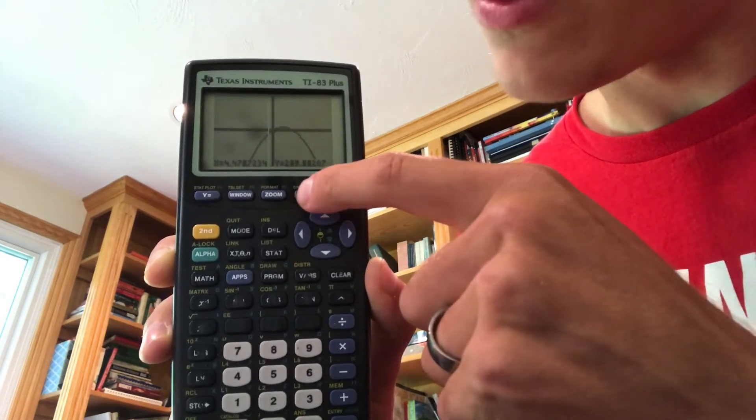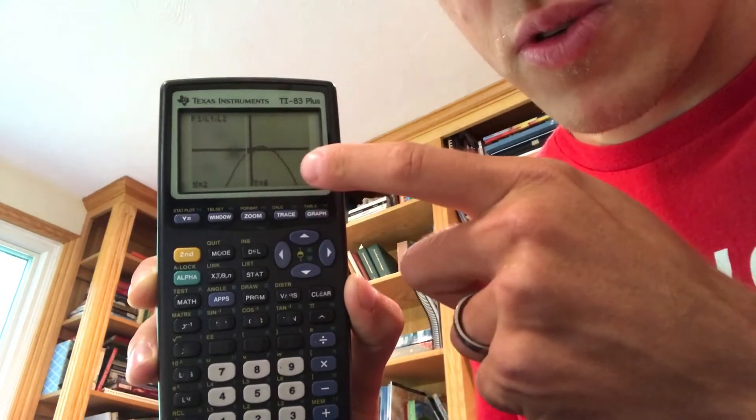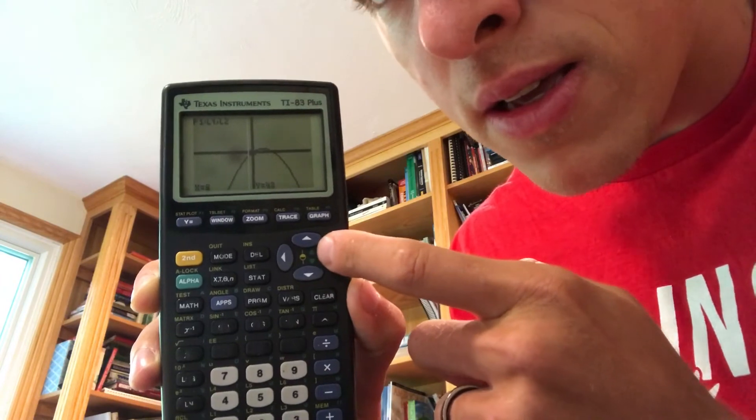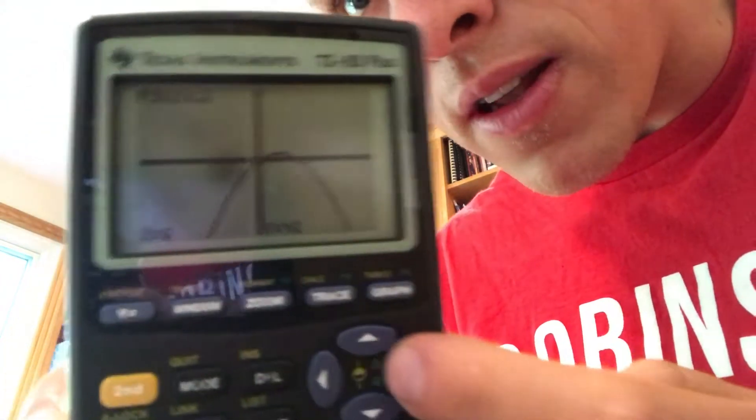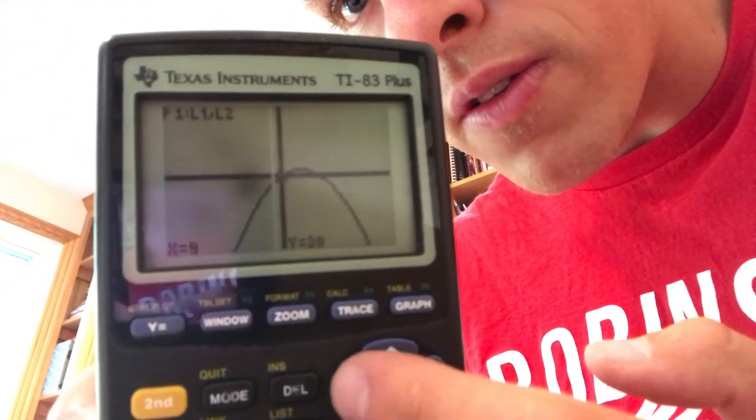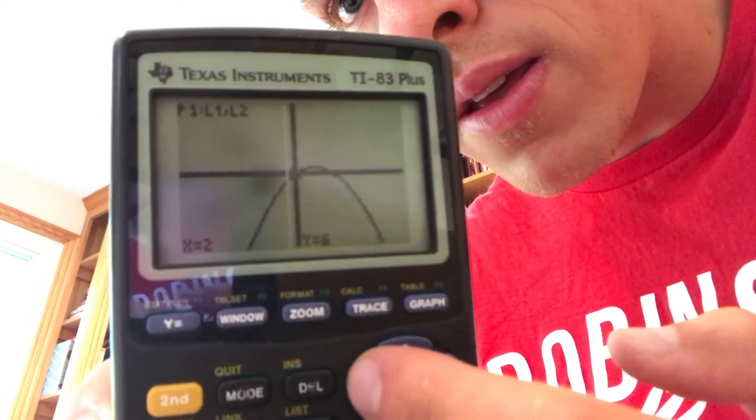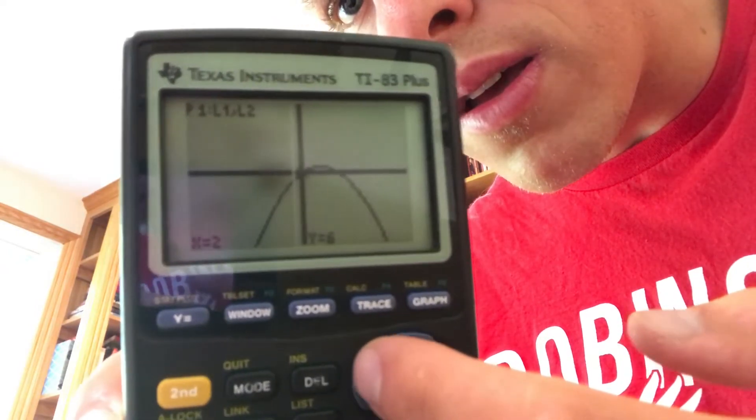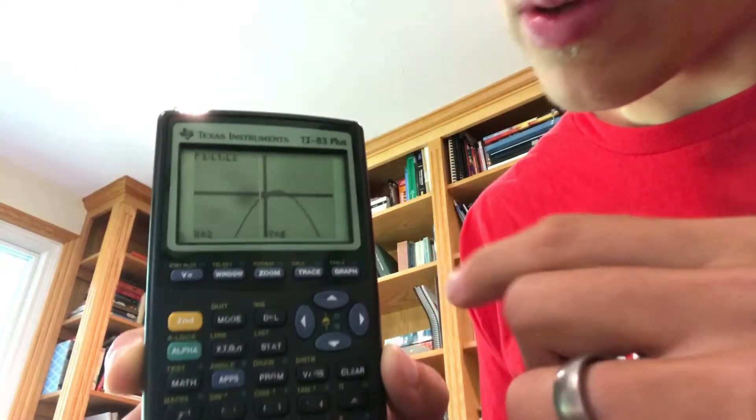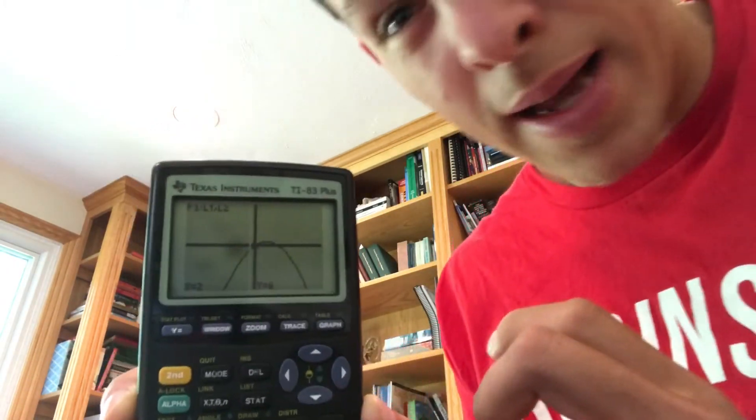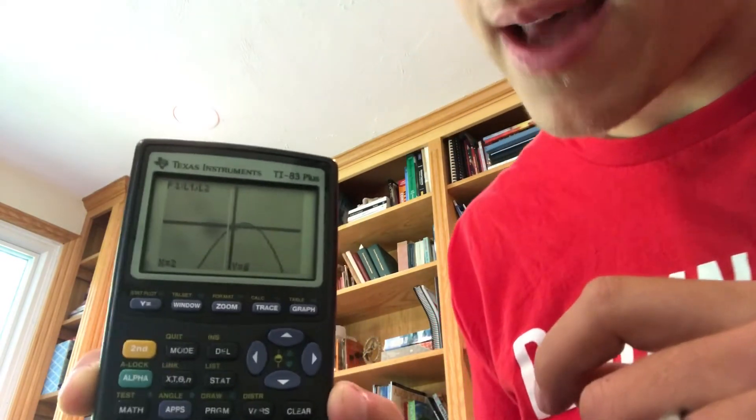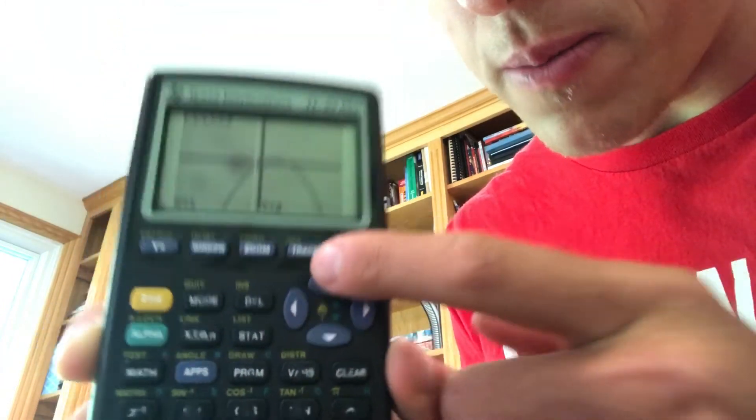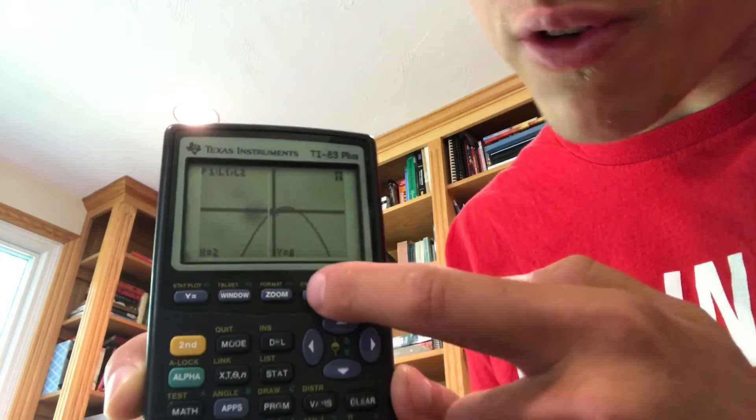So we're going to now use the calculator to find the exact maximum on there. So if I go over to trace, what it will do is put my cursor on it and I can just go left to right. Sometimes that will work. In this case, it's not. So we're going to hit second and trace. So we hit that calc button. So second, trace.